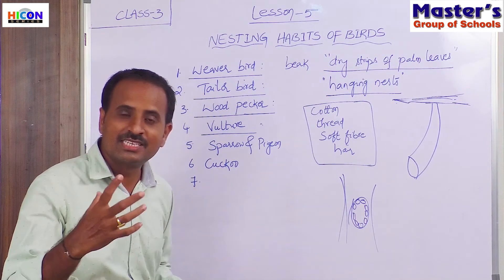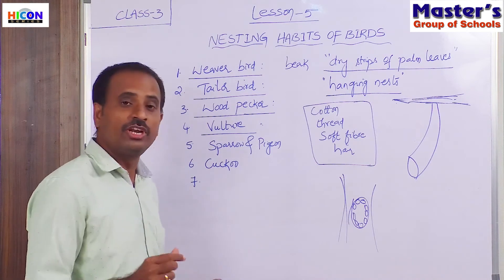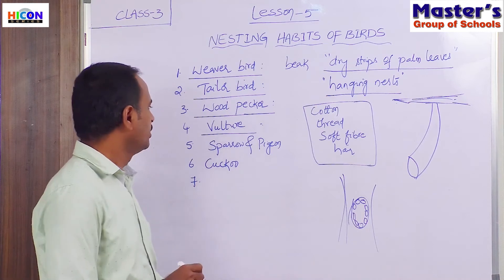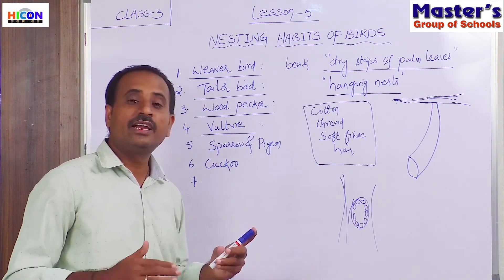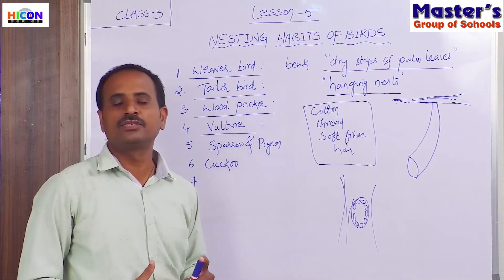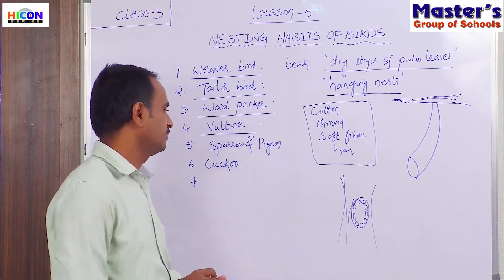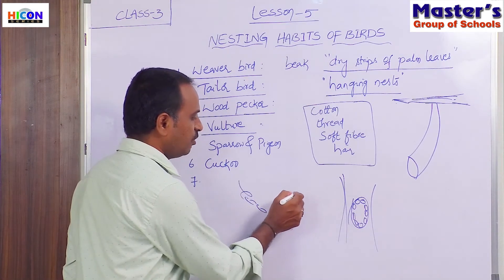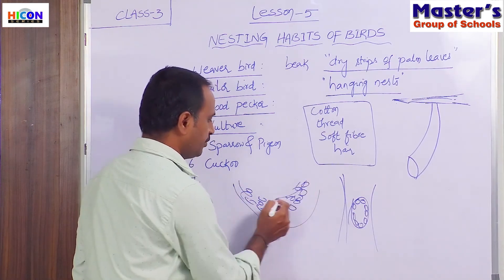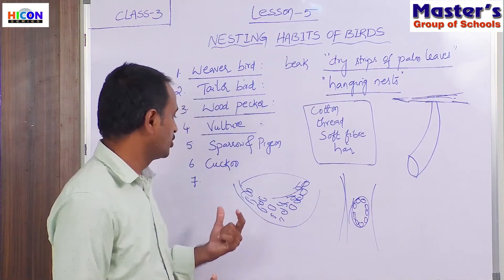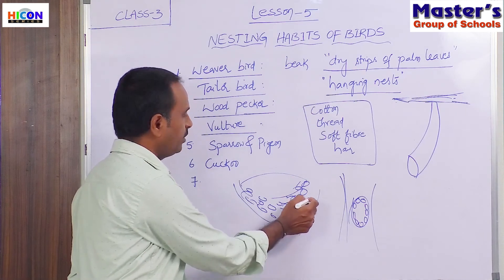The vulture builds its nest by collecting small sticks. It puts the small sticks together to make the shape of a shallow cup. So the shape of the vulture's nest looks like a shallow cup because the small sticks are arranged in that shape.